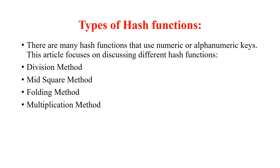Next we'll see the types of hash functions. I have explained how you calculate the index using the hash function. For storing elements in the hash table there are four methods: one is the division method, another is the mid-square method, third is the folding method, and fourth is the multiplication method. I'll prepare one video for every method. The two examples I just gave are both examples of the division method, because every time you are doing modulus you are getting the index.